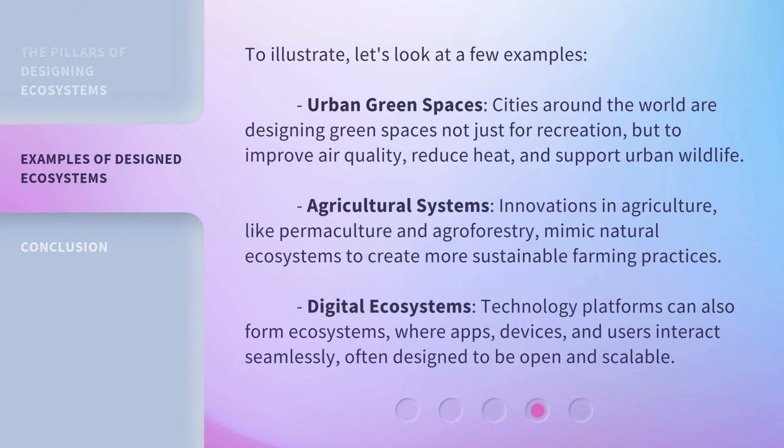To illustrate, let's look at a few examples. Urban green spaces: cities around the world are designing green spaces not just for recreation, but to improve air quality, reduce heat, and support urban wildlife. Agricultural systems: innovations in agriculture, like permaculture and agroforestry, mimic natural ecosystems to create more sustainable farming practices.